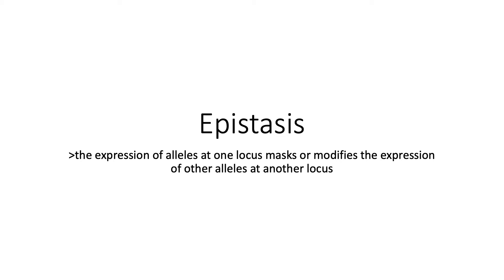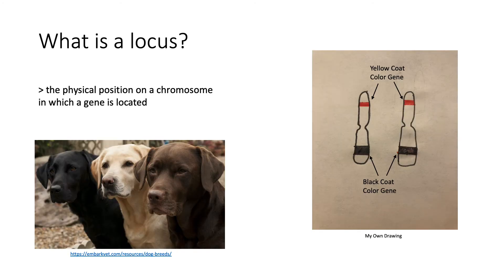Epistasis is when the expression of alleles at one locus masks or modifies the expression of other alleles at another locus. But first let me clarify that a locus is the physical position on a chromosome in which a gene is located, as you can see in the picture.